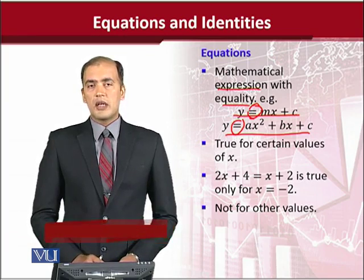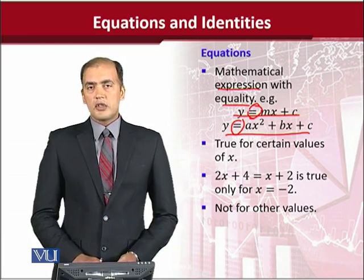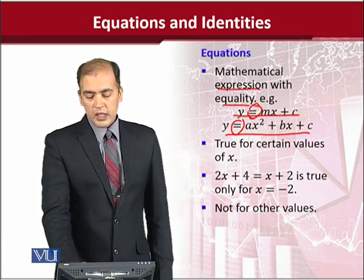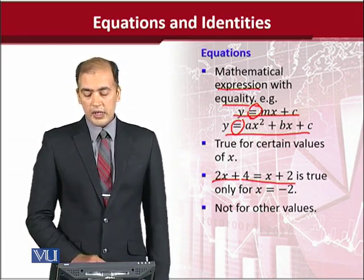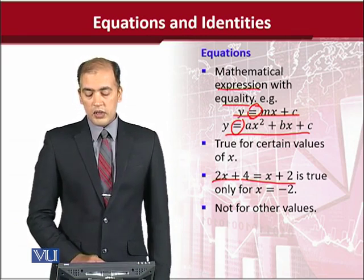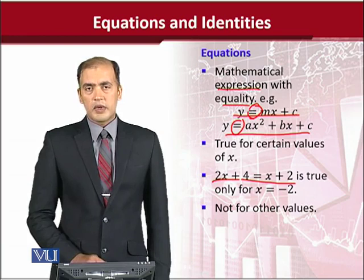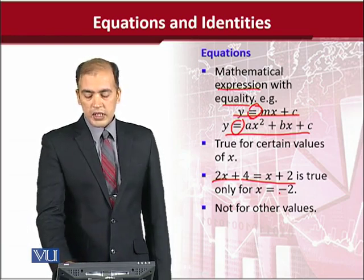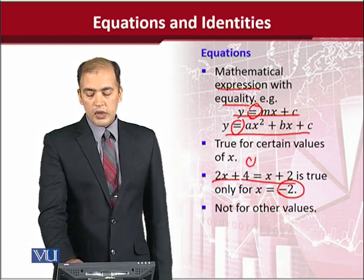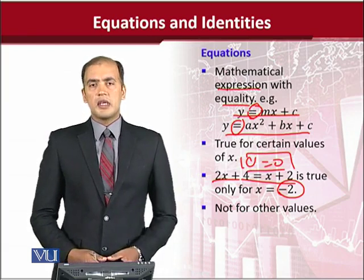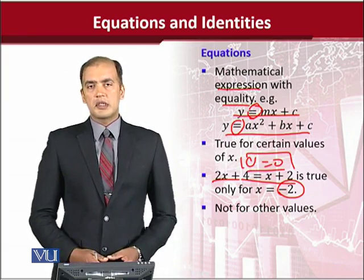There are only selected values that can satisfy an equation. Consider this example: the equation 2x + 4 = x + 2. If I put −2 in it, the answer will be satisfied on both sides — that is, 0 will equal 0. This is the case where the equation is established and satisfied.